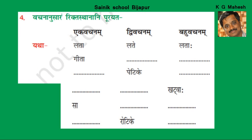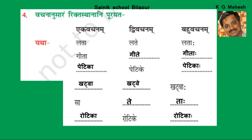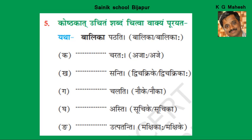We have come to know that Aakaranth Strilinga Shabda exists in Ekavachana, Dvivachana, and Bahuvachana — singular, dual, and plural form. This is the speciality of Sanskrit language where we have the singular, dual, and plural forms. We have completed this too.